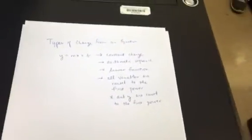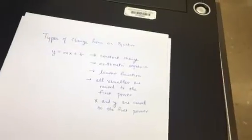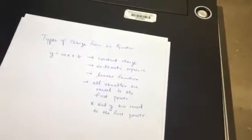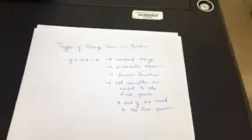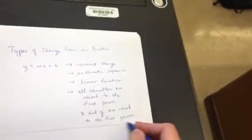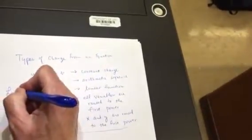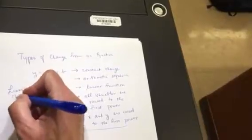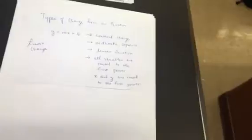So if you're given an equation on the final exam and it says, what type of change is this? Look to see if there's exponents on the variables, on the x and the y. Here's another type of change. Let me put here linear change. So that's our answer. You could say constant for this one, but I would be probably looking for linear.